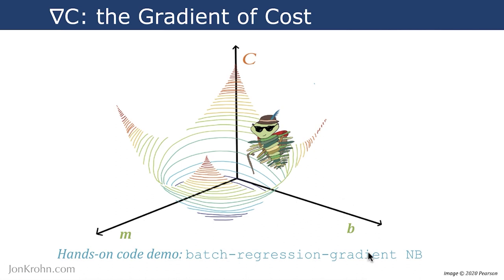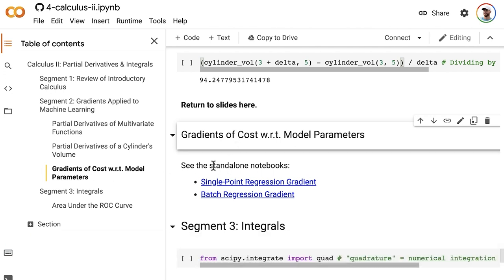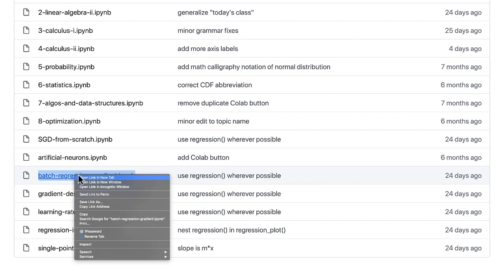Let's, as usual, jump to a hands-on code demo to start bringing this idea of descending the gradient of cost to life. If you've been following along with all of the videos in this machine learning foundation series, then you might already have the subject for Calculus 2 Jupyter Notebook up. We're currently in the gradients of cost with respect to model parameters section. In the most recent videos, we worked through the single-point regression gradient notebook. Now we're on to this batch regression gradient notebook. You can open that up here. Or, if you haven't been following the videos along sequentially, you can make your way to github.com/johncron/mlfoundations, go into the notebooks directory, and from there you can open up the batch regression gradient notebook.